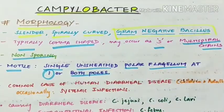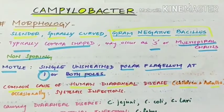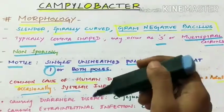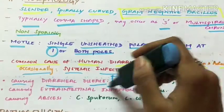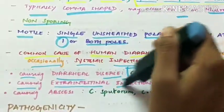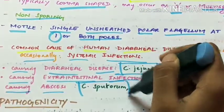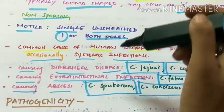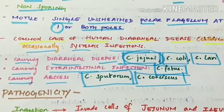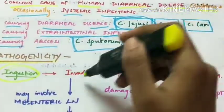Campylobacter is a common cause of human diarrheal disease in both children and adults, and can occasionally cause systemic infections. The species causing diarrheal disease are Campylobacter jejuni, Campylobacter coli, and Campylobacter lari. The species causing extra-intestinal infection is Campylobacter fetus, and the species causing abscess are Campylobacter sputorum and Campylobacter conchiscus. Campylobacter jejuni is the most common species causing infection in humans.